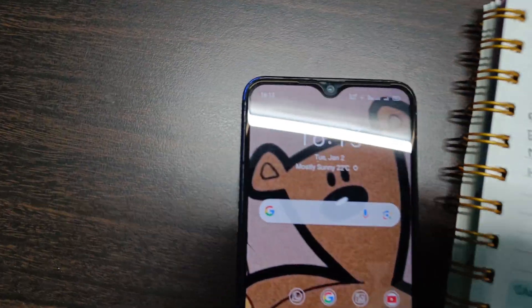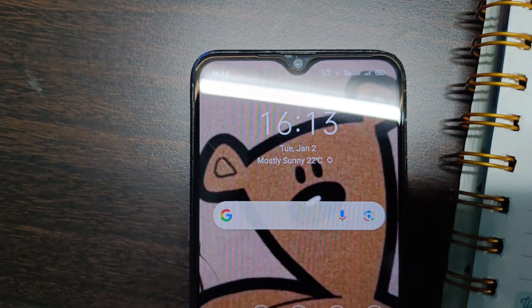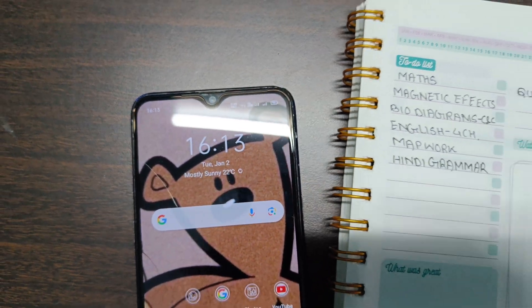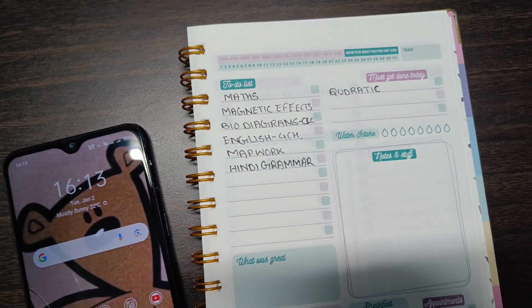Hi everyone! So it is currently 4:13 PM and today is 2nd January 2024, Tuesday, and this is my to-do list for today.